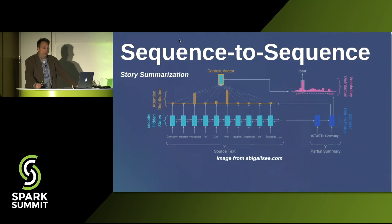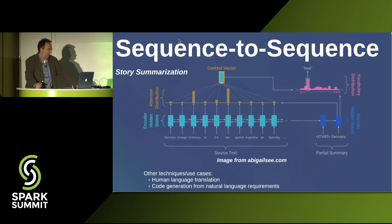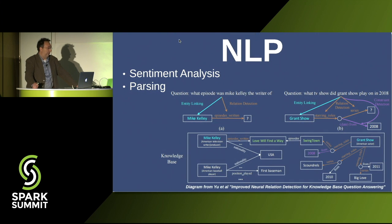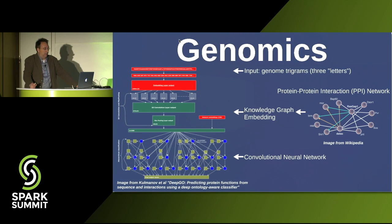There are various pipelines of neural and symbolic components. Sequence-to-sequence has been getting a lot of press — for example, story summarization using an RNN where you snoop the probabilities to find the most popular words for summarization. Sequence-to-class is what I'm presenting — the sentiment analysis. Another application is parsing: taking a natural language query and mapping it onto knowledge graph edges. In genomics, you can take a PPI graph, convert it into vectors using knowledge graph embedding, and pump it into a convolutional neural network.